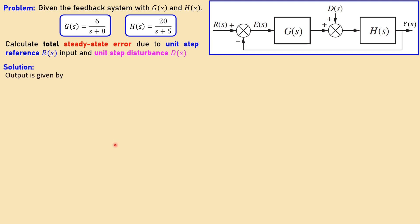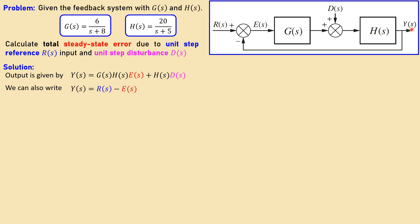Let's look at the solution. First, let's wrap up what the actual expressions — the formulas — are for our error. We know from this diagram that the Y output is G times H times this error, so using superposition you can see that here, and that is just a partial part of Y. Also the effect of D will be there as well — D times H will also contribute to Y.